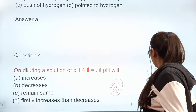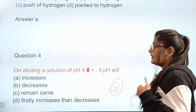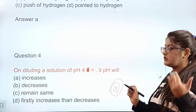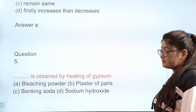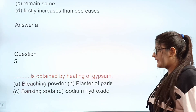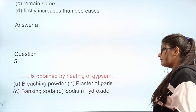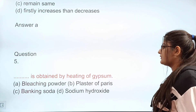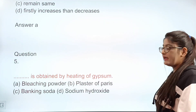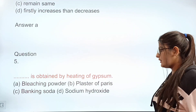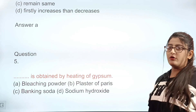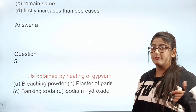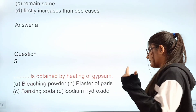Question 5: Dash is obtained by heating gypsum. What is obtained? Option A: bleaching powder. Option B: plaster of paris. Option C: baking soda. Option D: sodium hydroxide. Correct answer: B — plaster of paris.